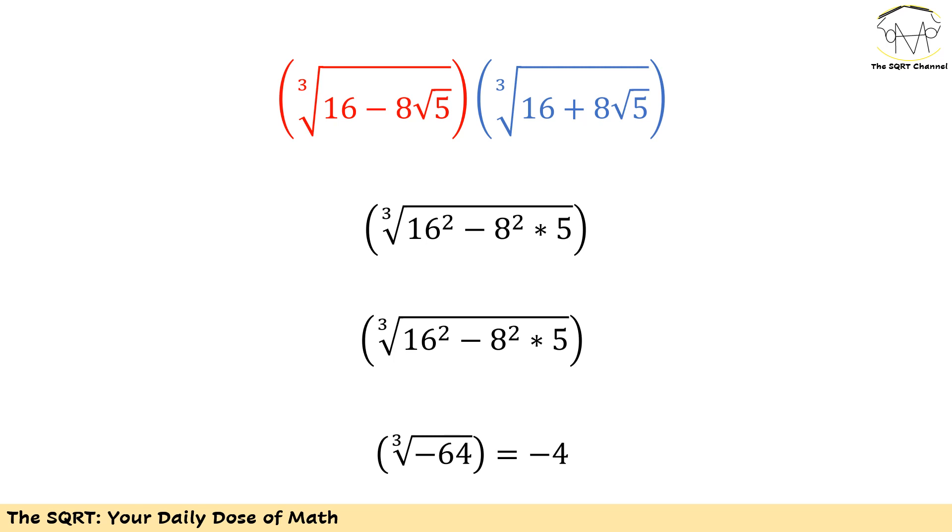We can write it as 16 to the power of 2 minus 8 to the power of 2 times 5. If you simplify, you are going to end up with the third root of negative 64, which is minus 4.